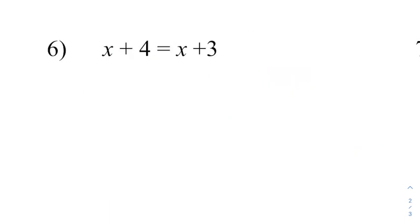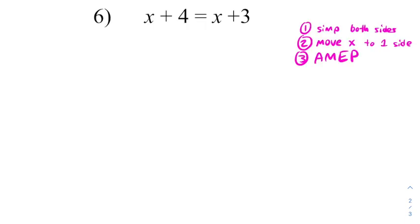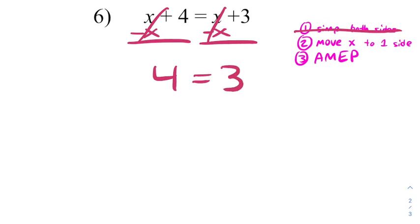Let's try one last example. Again, I'm going to go through my three-step process. I start by simplifying both sides, but there's no work to simplify x plus four or x plus three. Now I move on to moving x to one side. I'm going to subtract x from both sides. And what it does is it gets x out of the problem, leaving us with four equals three.